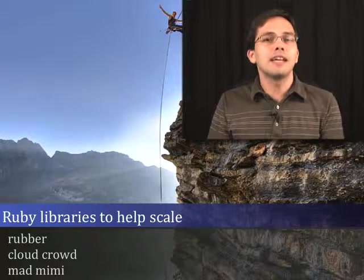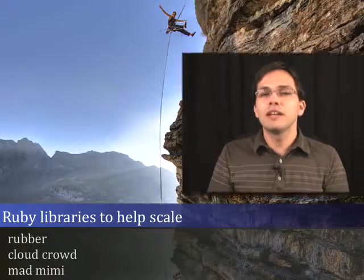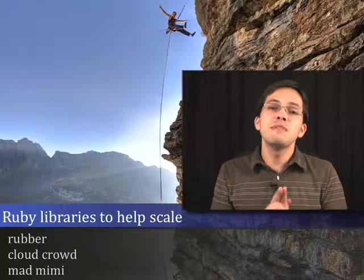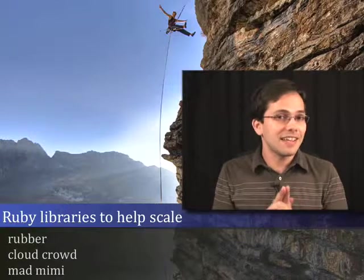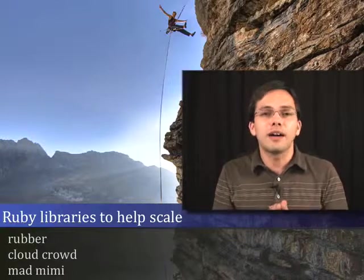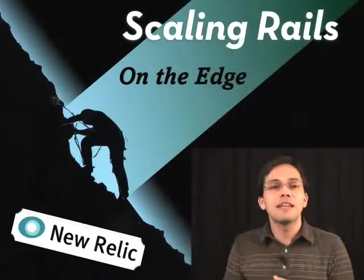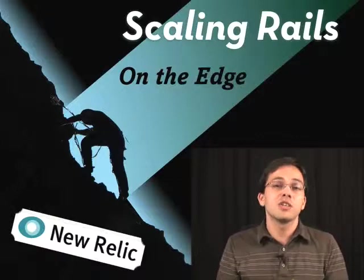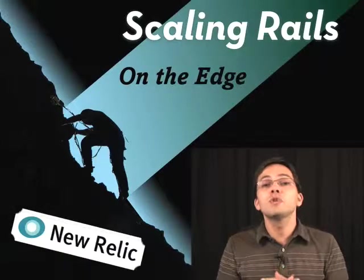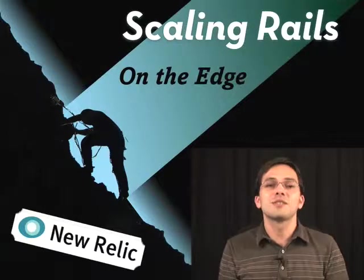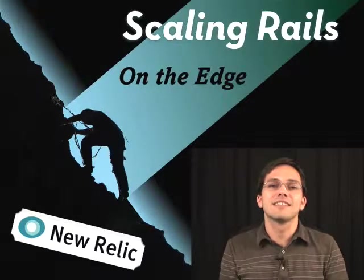If you want to keep up to date with new Ruby and Rails libraries that'll help you scale, be sure you subscribe to the Ruby 5 podcast — my twice-weekly podcast where we go over all the news in the Ruby and Rails community. And be sure that you've got New Relic RPM installed in your production server, so you know what your server's doing while you're sleeping and you can keep an eye on things. Thanks for watching this screencast — see you later.